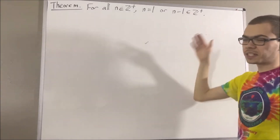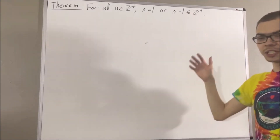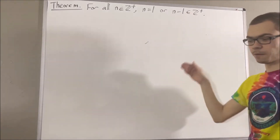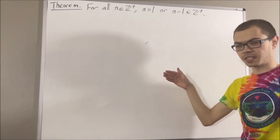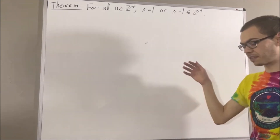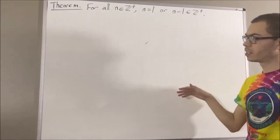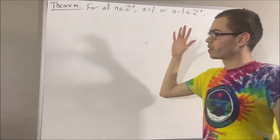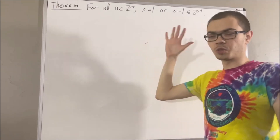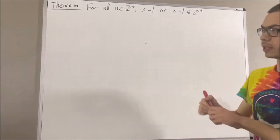Now, in this series we are using a list of 10 axioms for the real numbers, and I'll leave that list of axioms in the description below. In this video, we are going to be using the following axioms.